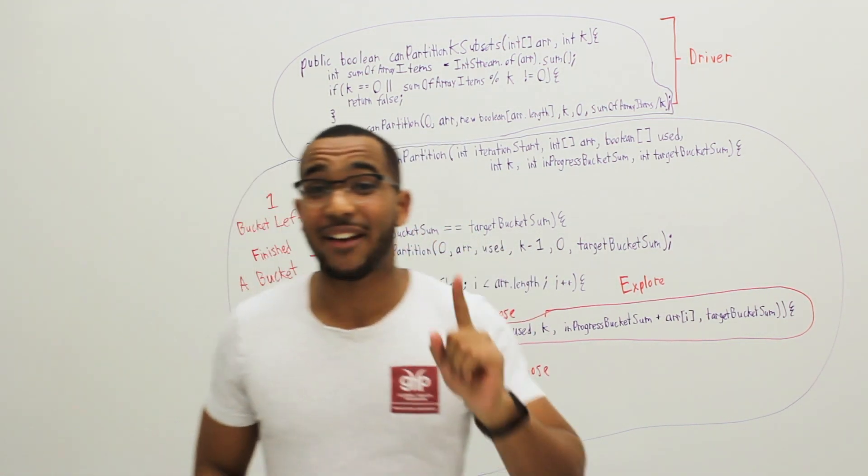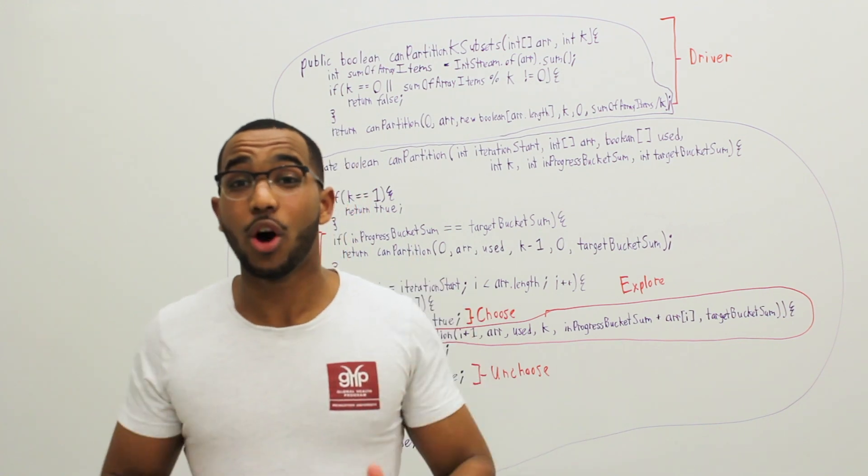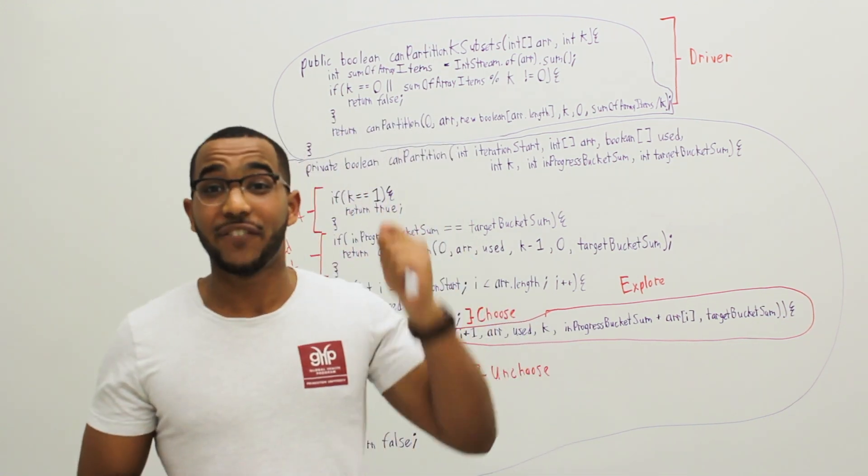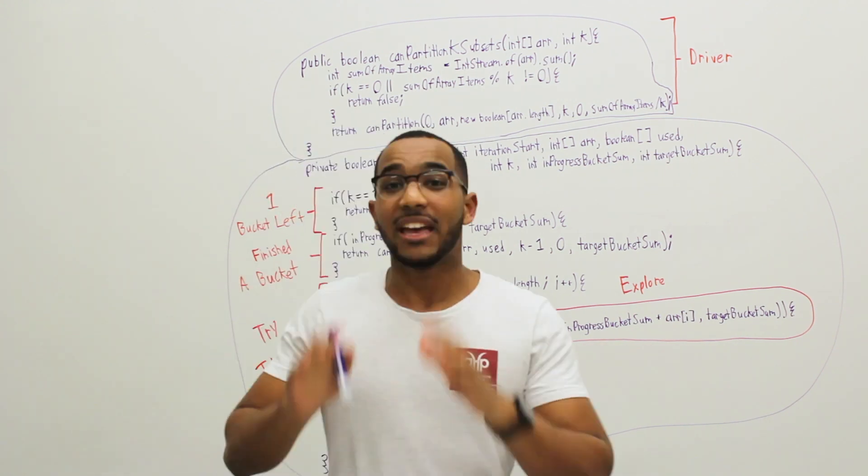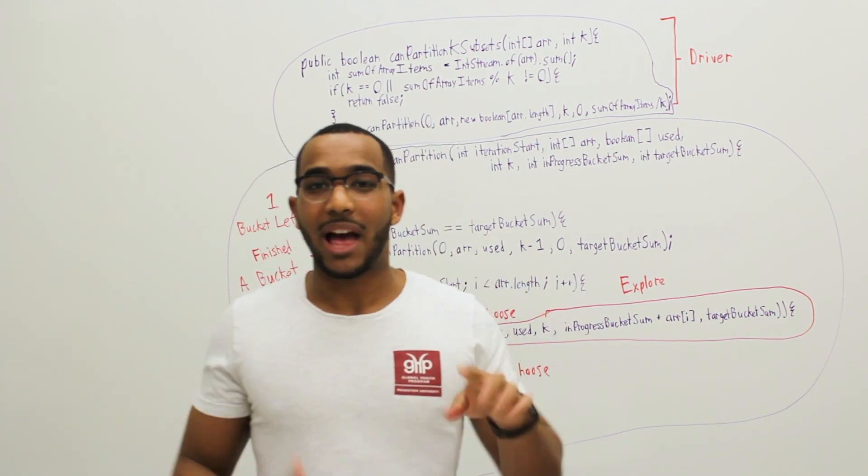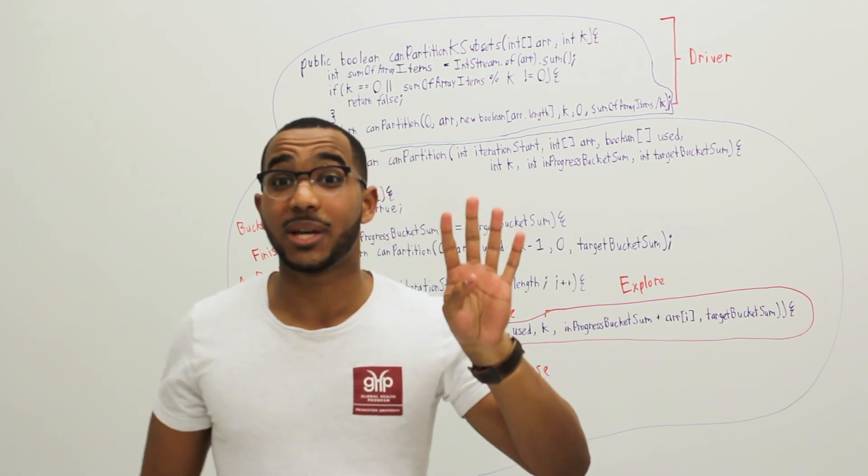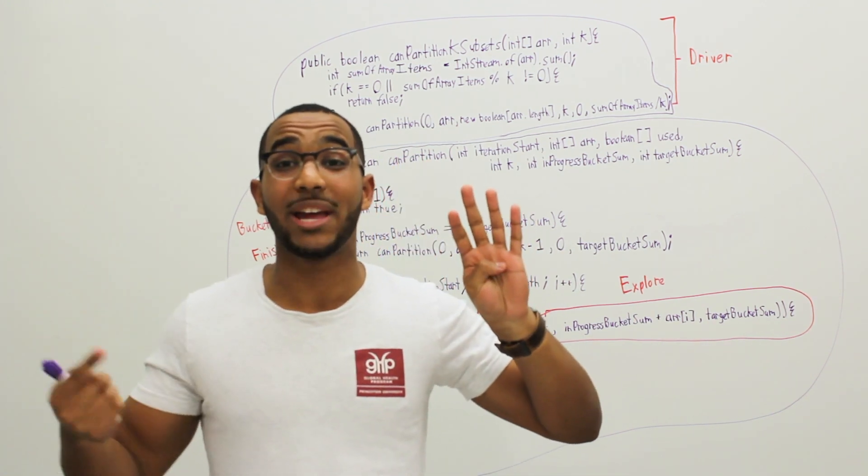If we have one bucket to fill left, we are finished. We know partitioning can happen because we have filled k minus 1 buckets. For example, if we, in our original example, had to fill 4 buckets, each bucket would have a target sum of 5 because the original total sum of our array was 20.